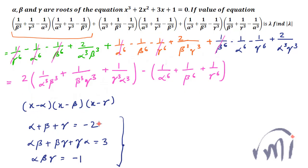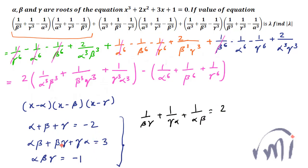But in our expression we have inverses of alpha, beta and gamma. Dividing the first relation by the third: 1/(βγ) + 1/(γα) + 1/(αβ) = −2/−1 = 2. Dividing the second by the third: 1/(αβγ) gives us αβγ = −1.